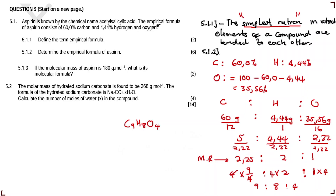The final empirical formula answer is C9H8O4. Make sure that if you divide the moles and get a decimal rather than a whole number, you round it off to two decimal places and express it as a fraction. Now, we are told the molar mass of aspirin is 180 g/mol. What is the molecular formula?